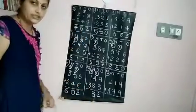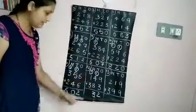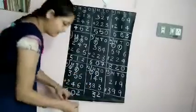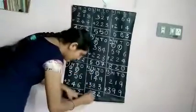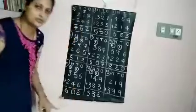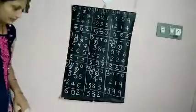Got it? Now add the hundreds. 1 plus 1 is 2, 2 plus 3 is 5. So 532 is the answer.